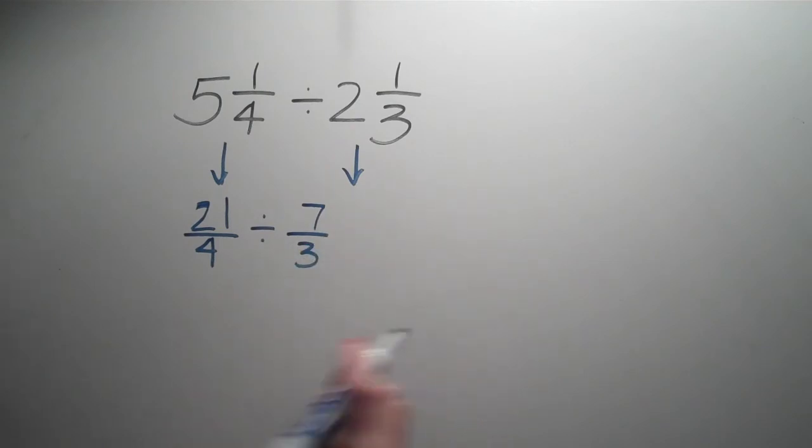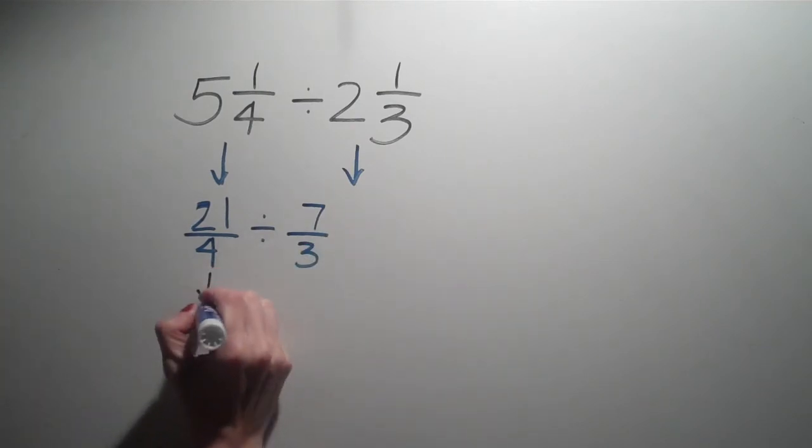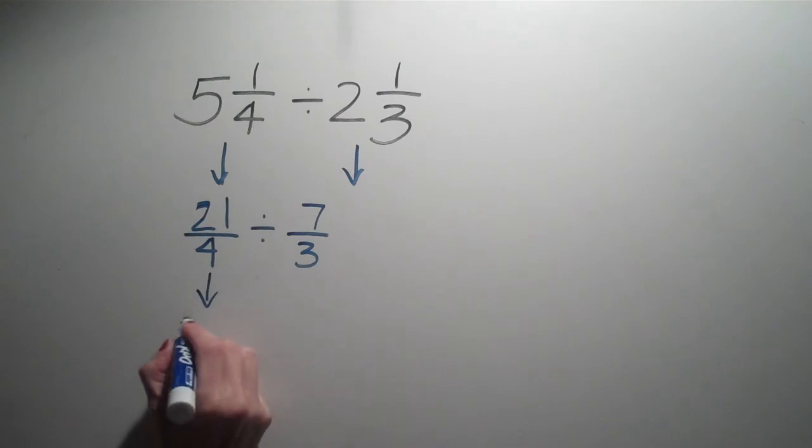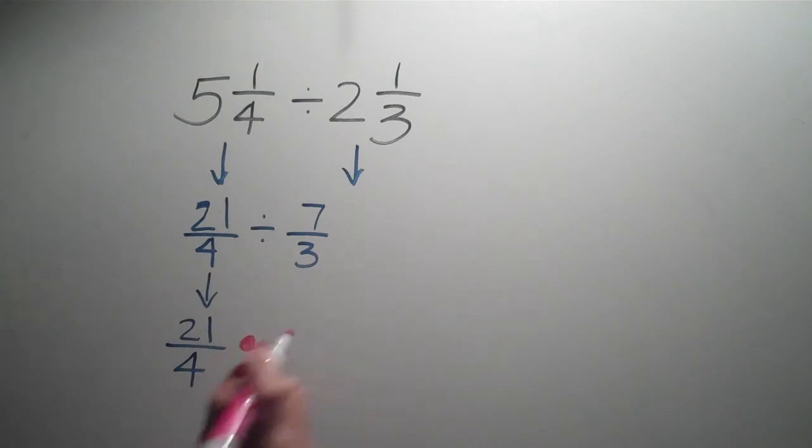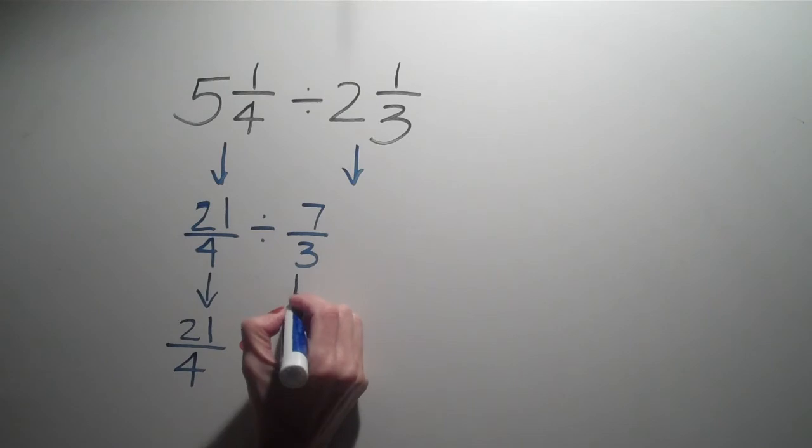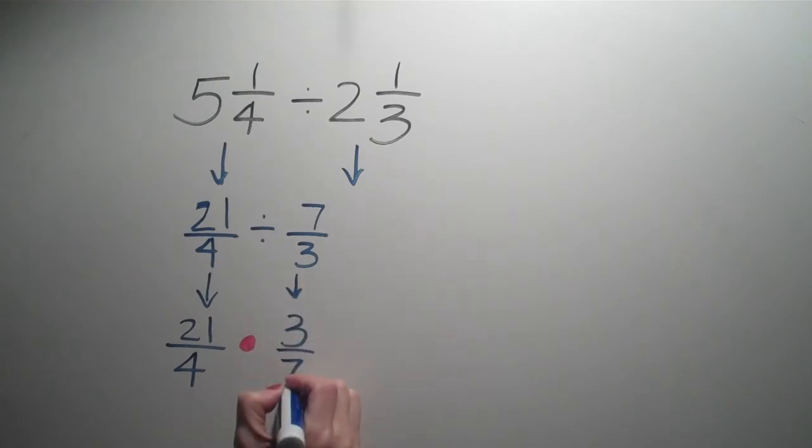Now I'm going to do the keep change flip. So I'm going to keep 21 over 4, I'm going to change to multiplication, and then I'm going to flip to 3 over 7. So what happens next?